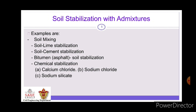These are all examples of Soil Stabilization with admixture. First is Soil Mixing. Second is Soil Lime Stabilization. Third, Soil Cement Stabilization. Fourth, Bitumen Asphalt Soil Stabilization. Fifth, Chemical Stabilization — which includes Chemical Chloride, Sodium Chloride, and Sodium Silicate. Here we are using other materials for stabilization of soil.